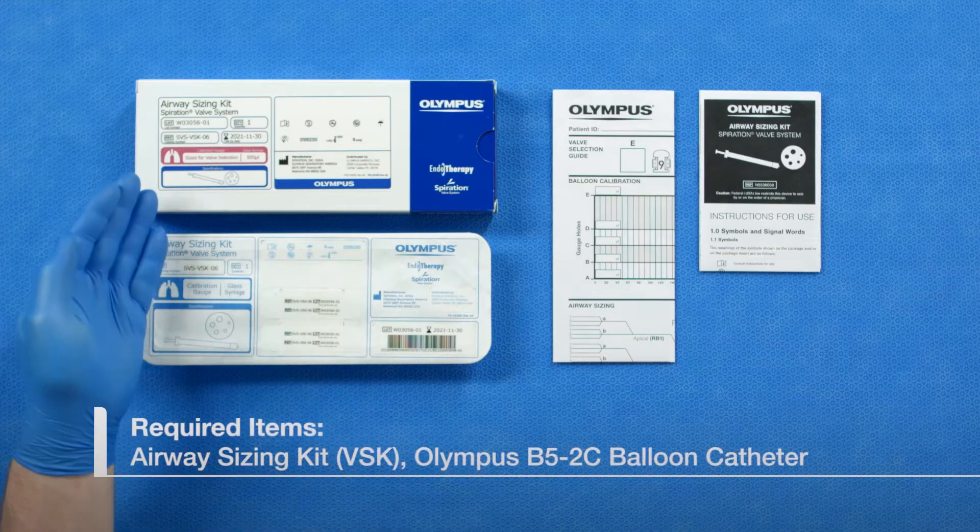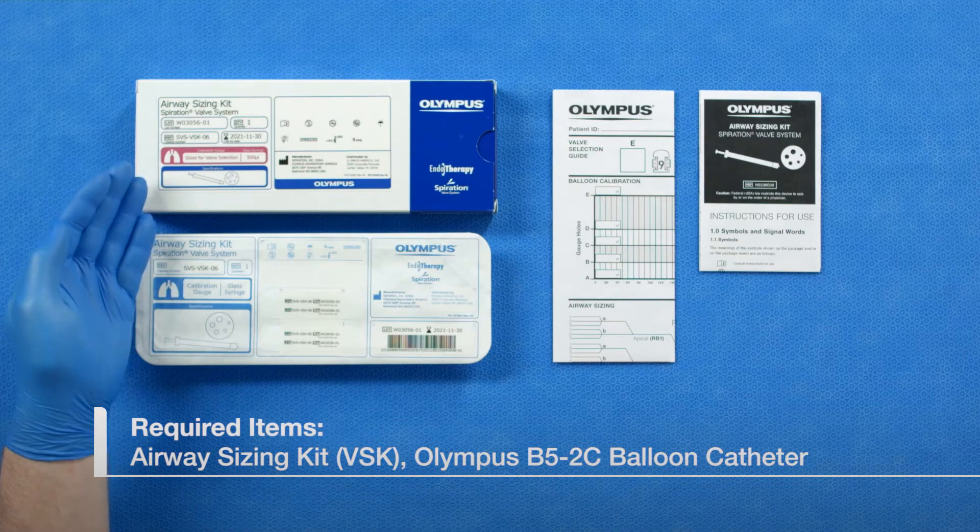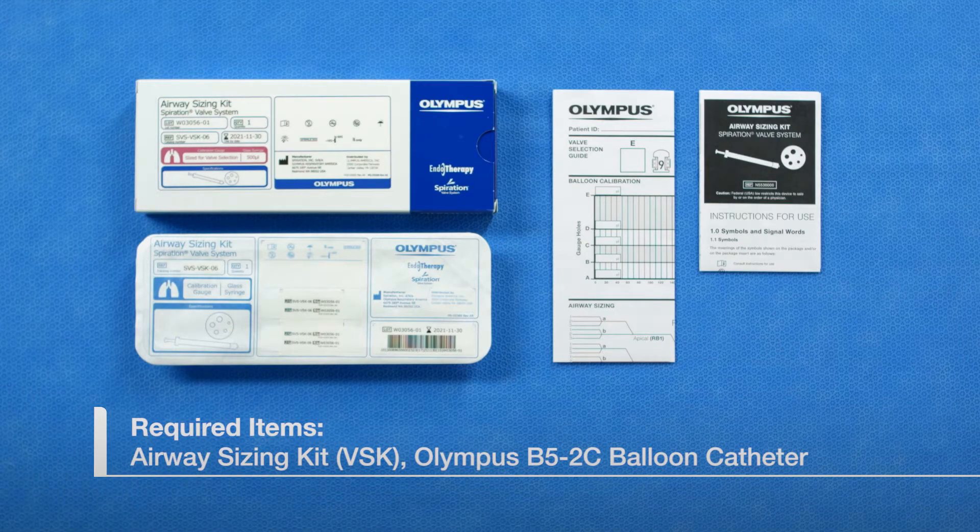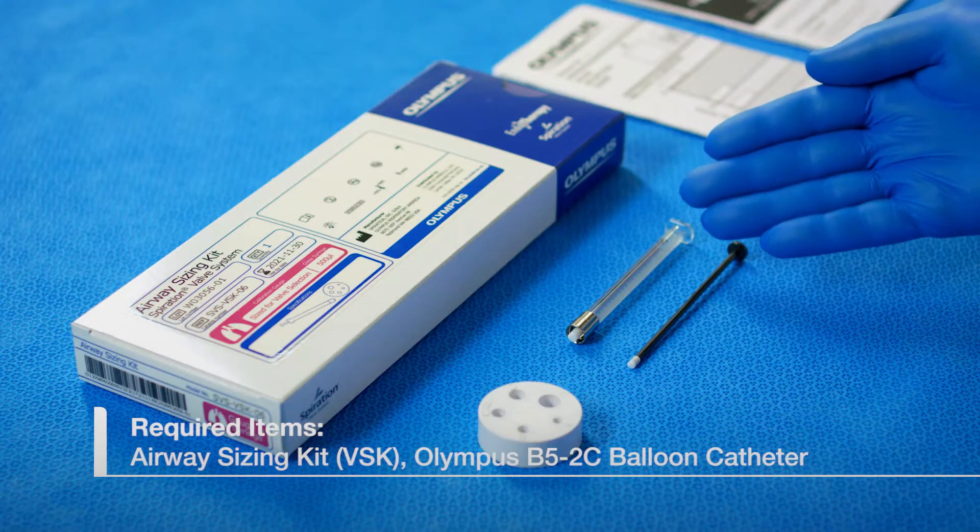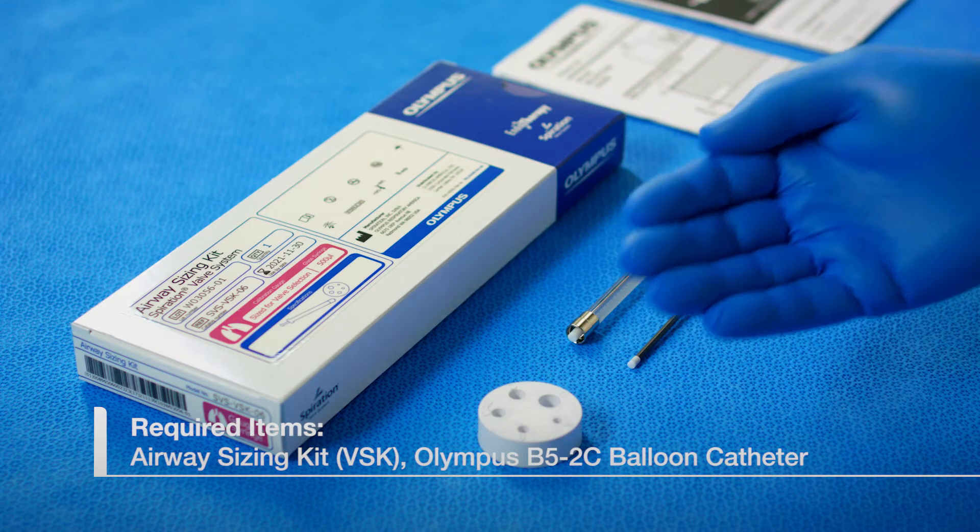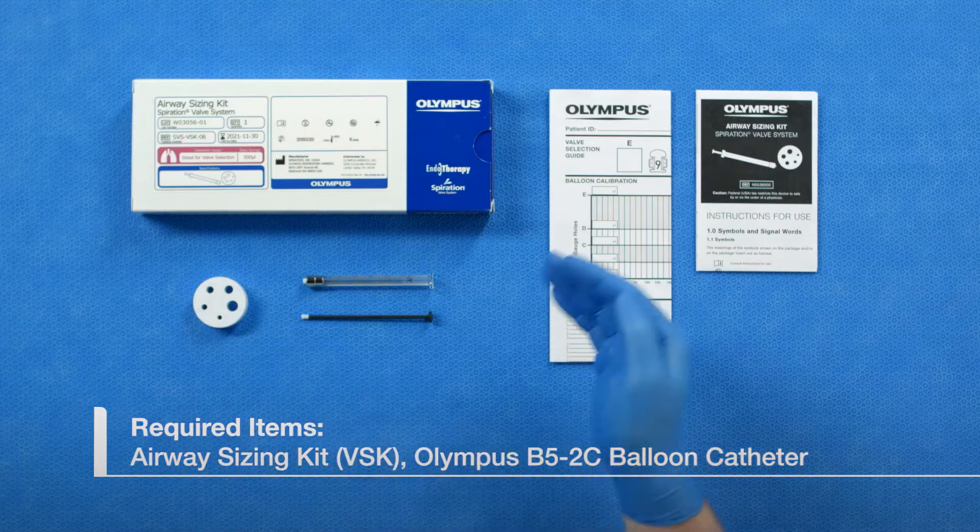The airway sizing kit in conjunction with the Olympus B5-2C balloon catheter is used to determine the appropriate valve size to use for each target airway. The airway sizing kit consists of a glass microliter syringe, a calibration gauge, and a sizing worksheet.